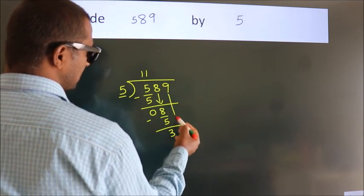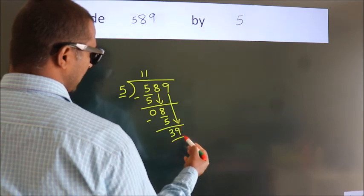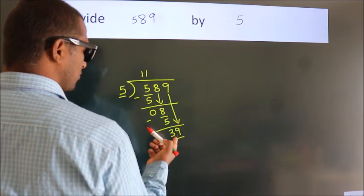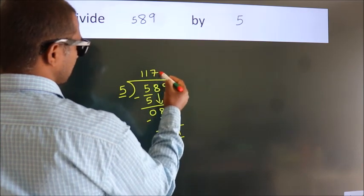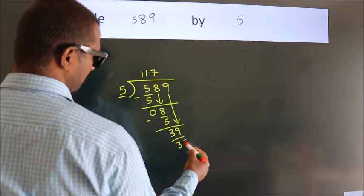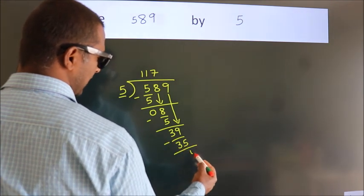After this, bring down the beside number. So, 9 down. So, 39. A number close to 39 in 5 table is 5 sevenths, 35. Now, we subtract. We get 4.